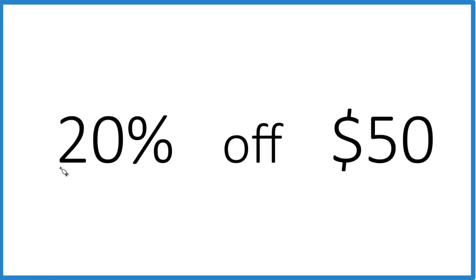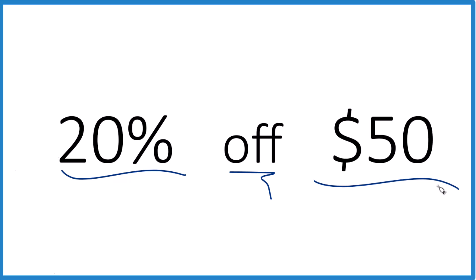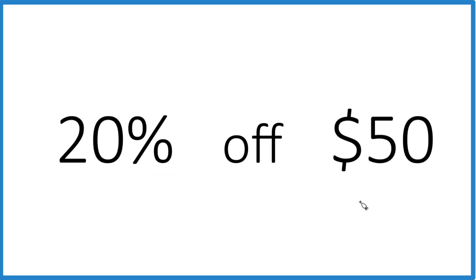If you need to take 20% off of $50, here's how you do it. The answer is $10, so you'd pay $50 minus $10 — $40 for your purchase after your percent off. I'll show you the math way and then the way I think about it when I'm going to the store.